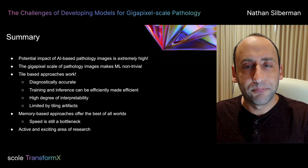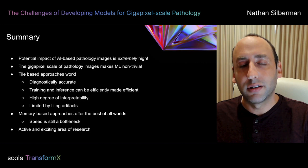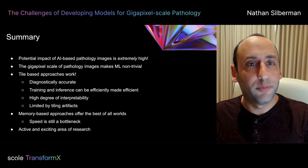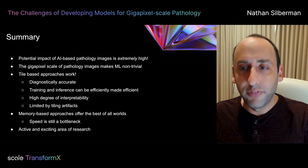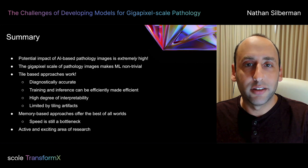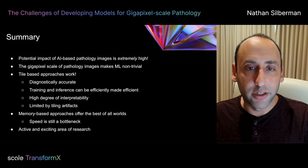These models can be made to have a high degree of interpretability, but they are still limited by some tiling artifacts and are a little prone to overfitting given the sizes of the datasets commonly used in the pathology space. Memory-based approaches — ones that are smart in memory management but still deal with the entire image at a time — conceptually offer the best of all worlds, and there has been fantastic progress in performing inference on images of absolutely enormous scale. That being said, speed is still a bottleneck. However, this is very much an active and exciting area of research, and I anticipate we'll continue to see a lot of advances over the next couple of years. Thank you very much and enjoy the rest of the conference.